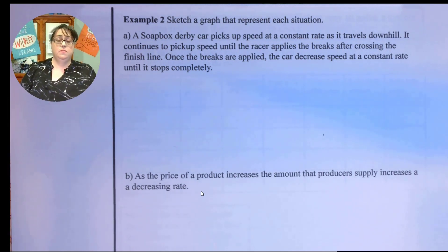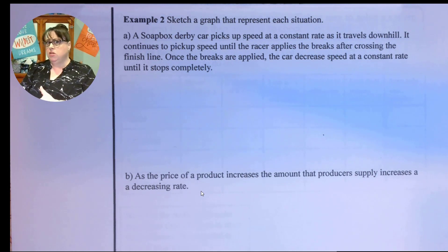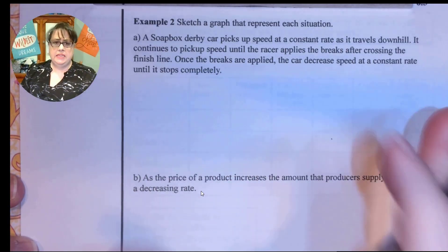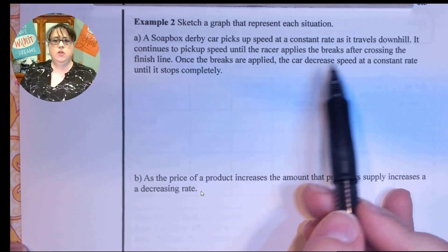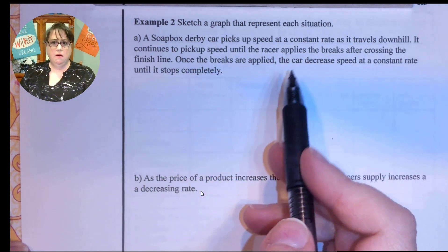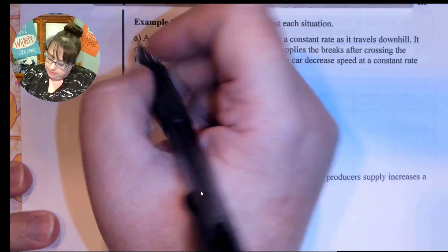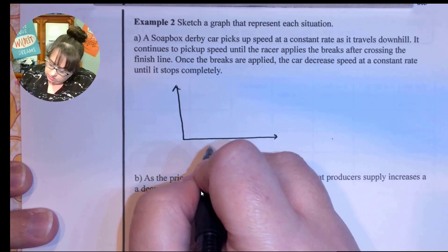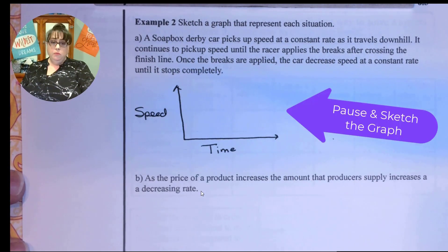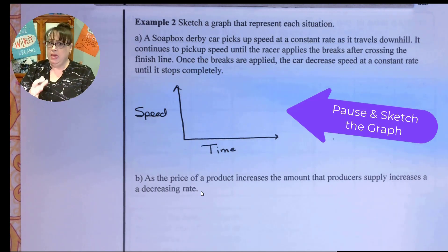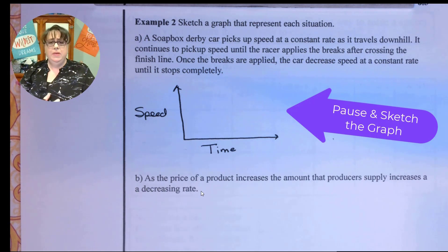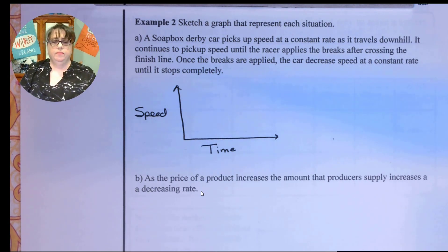So in these next two examples, what we're going to be doing is making the graph that goes along with the words. I'm actually going to challenge you to make that graph before I do, but let's get the axes set up. A soapbox derby picks up speed at a constant rate while it travels downhill. It continues to pick up speed until the racer applies the brakes after crossing the finish line. Once the brakes are applied, the car decreases speed at a constant rate until it stops completely. So we are definitely looking at speed versus time. So time dictates how fast we go. So what I'd really like you to do is I would like you just to take a pencil and sketch on what you think. And then I would like you then to maybe take a pen and sketch in the answer I give you, because understanding what you thought and then what I gave you for an answer is really going to help.